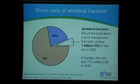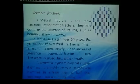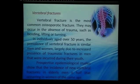Vertebral fracture is underdiagnosed, and even though it constitutes around 60% of the total direct cost of osteoporotic fracture, it is a very costly complication. It costs the USA around $1 billion and Europe around $700 million. It's not just a serious disease — it burdens the finances of any country.